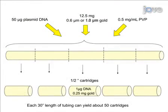For each preparation of cartridges, 50 micrograms of total plasmid DNA are mixed with 12.5 milligrams of gold particles and 0.5 milligrams per milliliter of PVP solution.